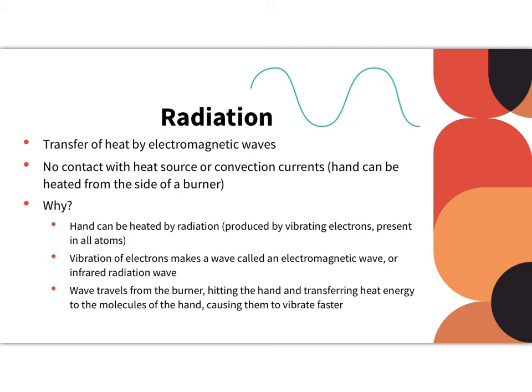Our last type is radiation. This is the transfer of heat by electromagnetic waves. There is no contact required with the heat source, and there are no convection currents. What this means is that your hand could be heated from the side of a burner. So if you're standing in front of a burner that's on, you can feel heat without actually putting your hand over top or even worse on top of the burner.